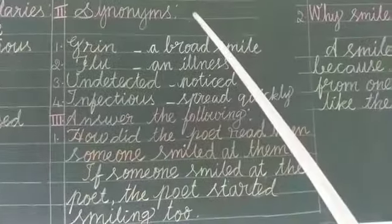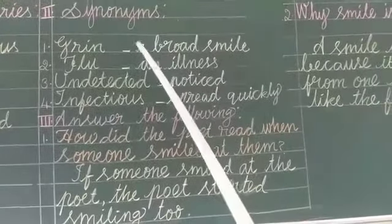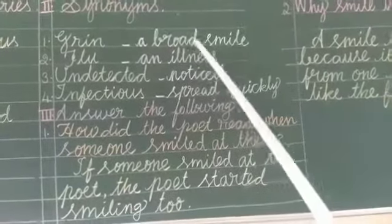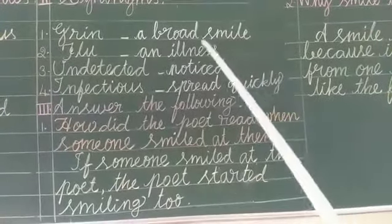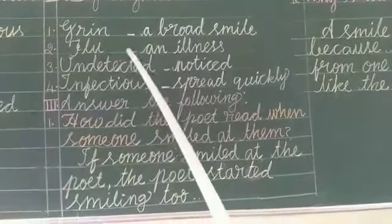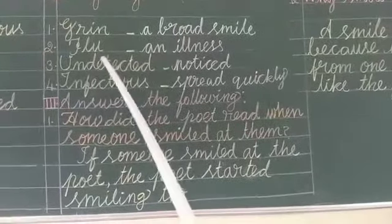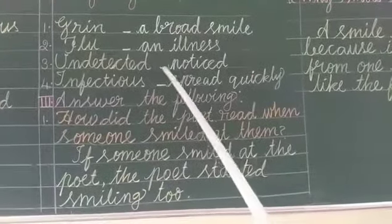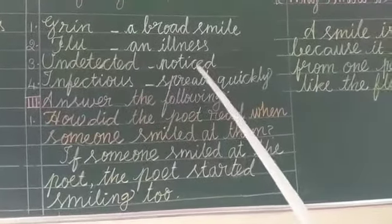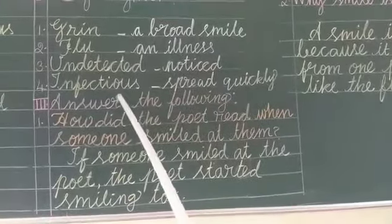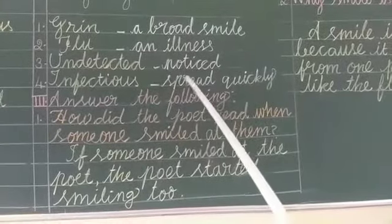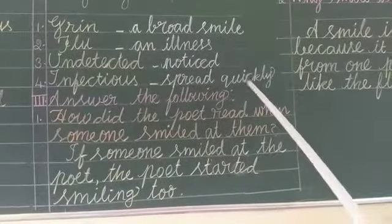Third Roman scenarios. Green - a broad smile. Flow - an illness. Antitecture - notice. Infectious - spread quickly.